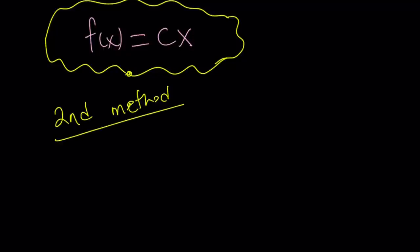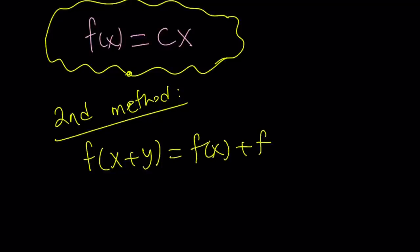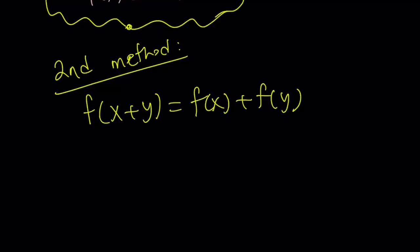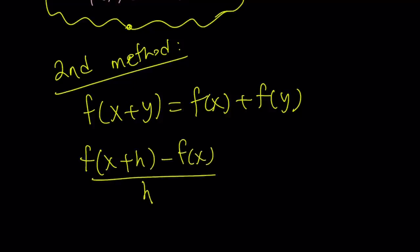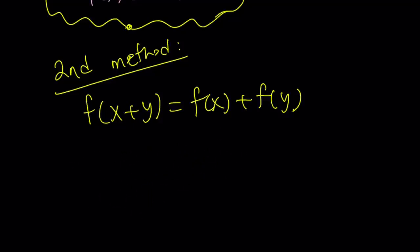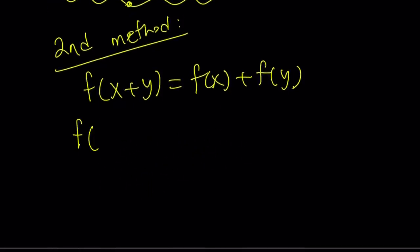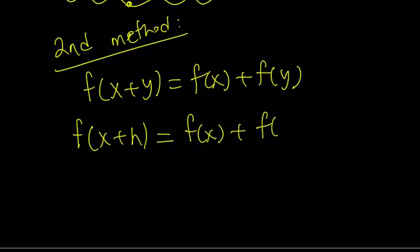The second method also uses differentiability of f. We rewrite the equation f(x+y) = f(x) + f(y) and evaluate the difference quotient: f(x+h) minus f(x), divided by h. First, let's find f(x+h): by the functional equation, f(x+h) = f(x) + f(h).